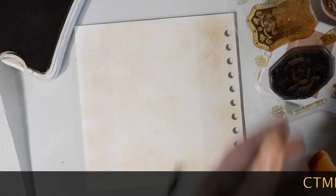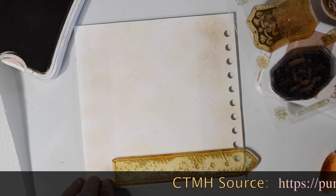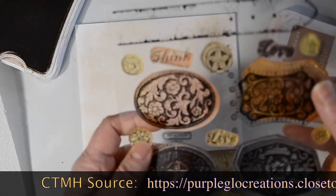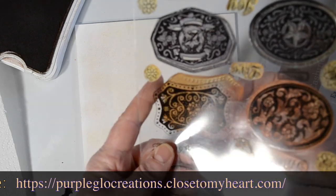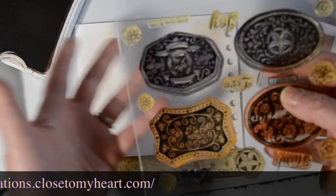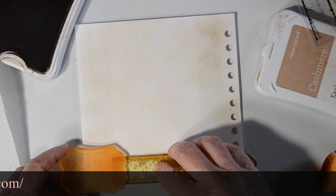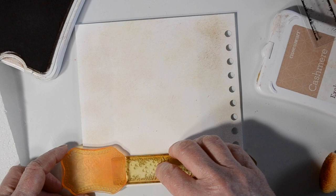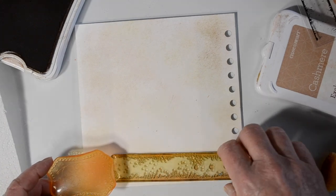This is also a stamp set from Close to My Heart and it is also retired. This is actually a belt buckle set. I believe it's called Lovely Buckles. And I'm going to go ahead and use the belt itself and then I'm using this belt buckle as a piece that I'm going to paste in. So I'm sort of figuring out here how I want this to lay on the page.